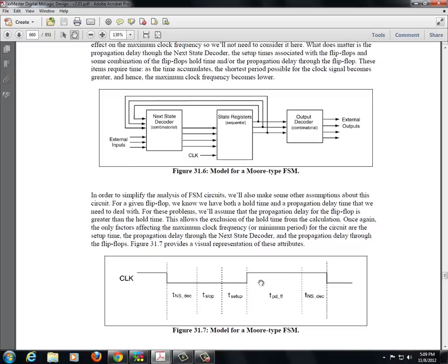So in this example though, the hold time is shorter than the propagation delay, so we can ignore the hold time. Then you see we also have this thing called T slop. And this is sort of a margin that we add in to make sure that we're not just operating at the very edge of possible operation. This adds some extra time in just to make sure that we're going to be okay with our timing.